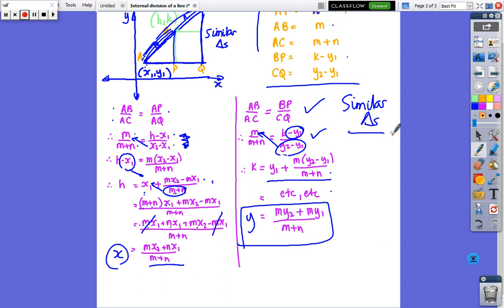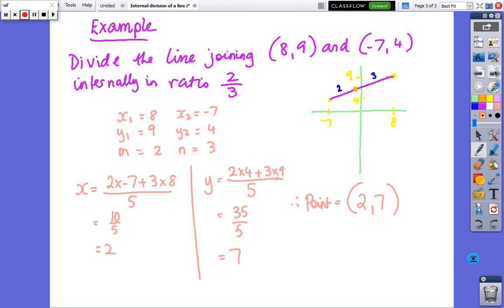All right, so let's look at an example. You don't need to worry about copying that down. Okay, so divide the line joining (8, 9) and (-7, 4) into the ratio 2 to 3. Now, this diagram is not to scale, but what I'm trying to find is some point where that distance there is 2 and that distance there is 3 in comparison to each other. Okay, they're not 2s and 3s, this is the ratio.